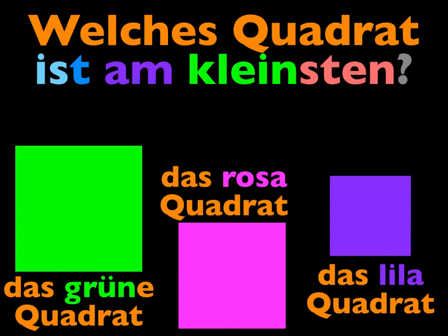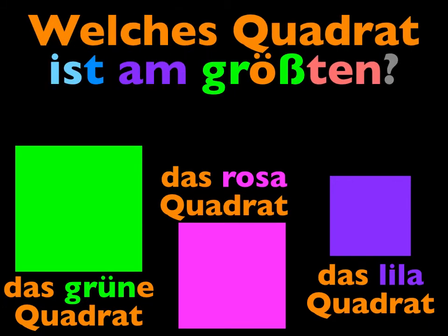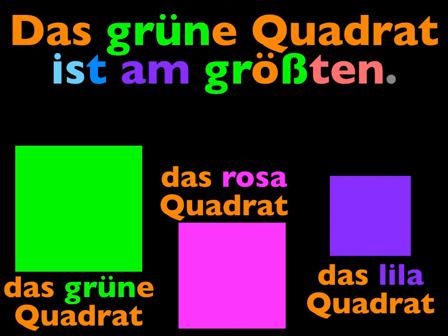Welches Quadrat ist am kleinsten? Das grüne Quadrat, das rote Quadrat, oder das lila Quadrat? Das lila Quadrat ist am kleinsten. Welches Quadrat ist am größten? Das grüne Quadrat, das rosa Quadrat, oder das lila Quadrat? Das grüne Quadrat ist am größten.